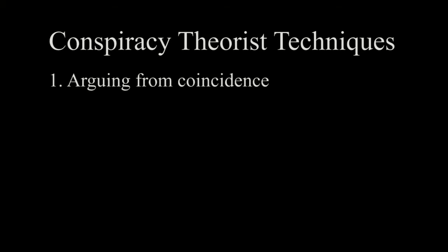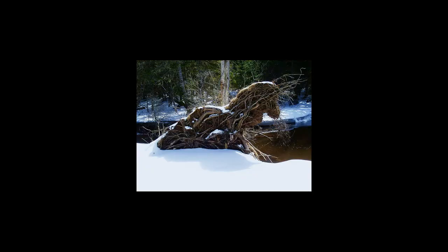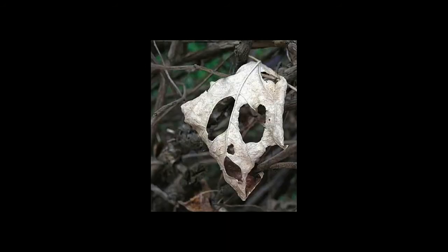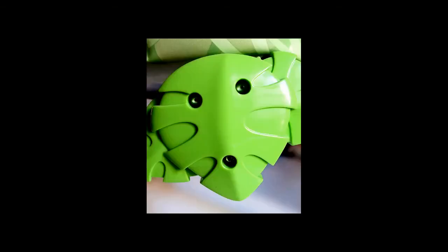Conspiracy theories make heavy use of three techniques. Technique number one: arguing from coincidence. Conspiracy theorists love to exploit the phenomenon called pareidolia. Pareidolia is what happens when our minds impose patterns on randomness. Inkblot tests are an example of pareidolia, as is our tendency to see faces in rocks, trees, and clouds.